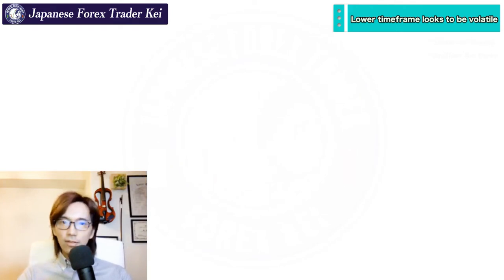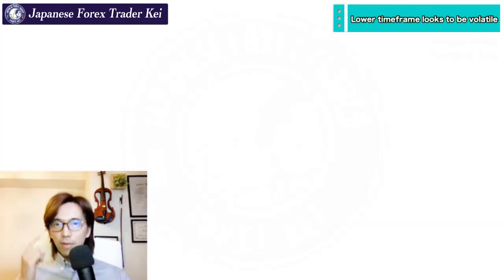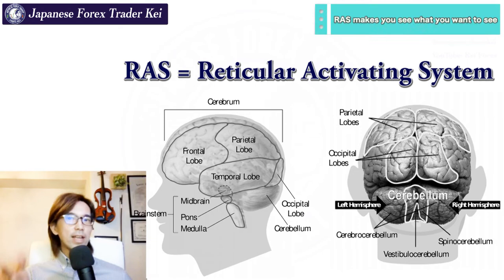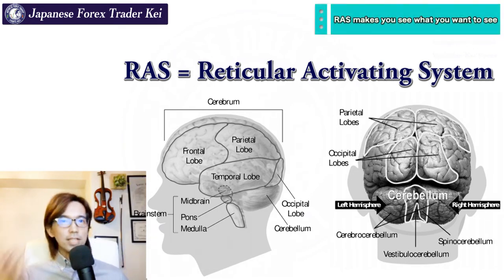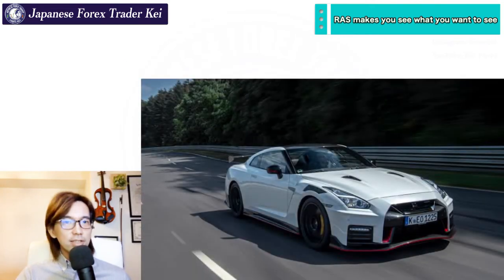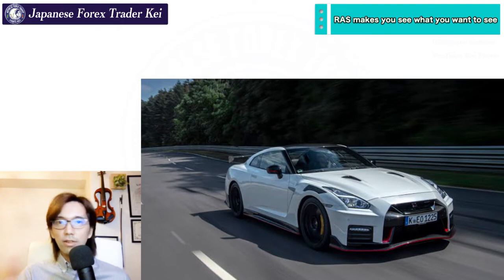But why do you think it happens? Why do you cut the loss too soon and cannot extend the profit? There's a function in our brain called RAS — it stands for Reticular Activating System. For example, when you buy a new car, like a Nissan GTR, then you start to see and focus on the same Nissan GTRs on the street.